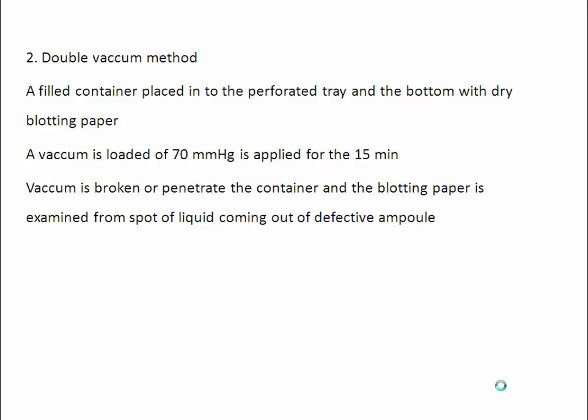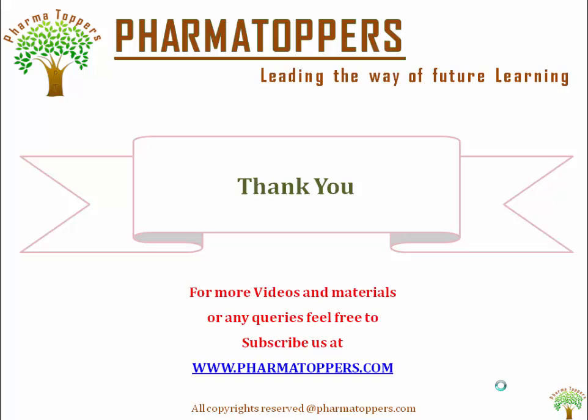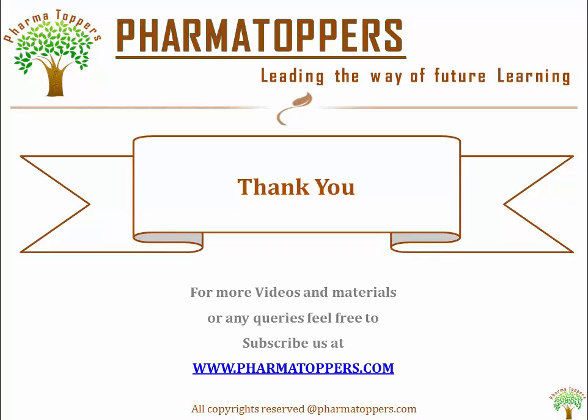In the double vacuum method, the same procedure is followed but blotted paper is used. If a spot or wet spot occurs on the blotted paper, it confirms that there is leakage in the ampoule. Thank you — for more videos you can log on.